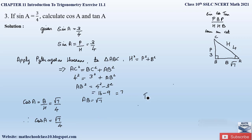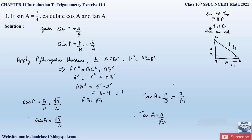Similarly, let us find out the value of tan A. The trigonometric ratio for tan is perpendicular by base. Our perpendicular value is 3 and base is √7, so therefore tan A = 3 / √7. This is a very simple and easy problem, as long as you know the trigonometric ratios.